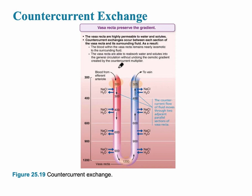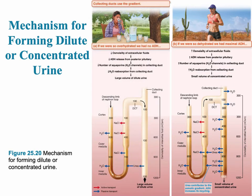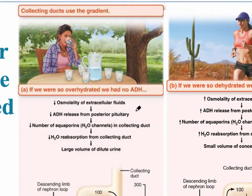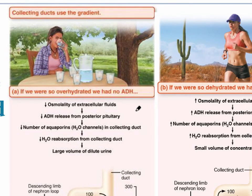The mechanism is important for forming both dilute and concentrated urine, as shown on the next slide. In the image to the left, if we're overhydrated, we have no ADH. A low osmolality of the extracellular fluid leads to a decreased release of ADH from the posterior pituitary.